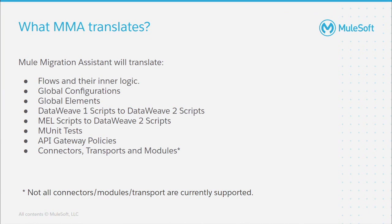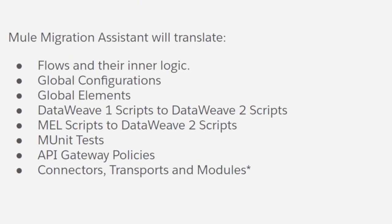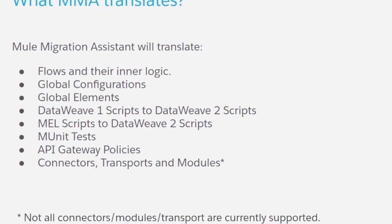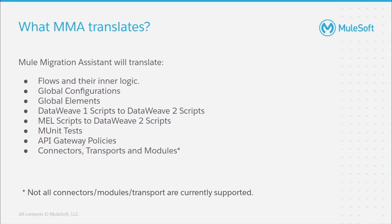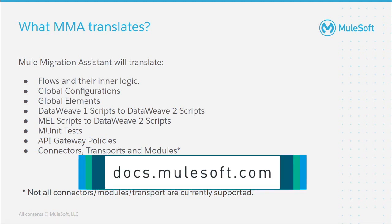Since the MMA tool won't translate 100% of your applications, this naturally brings up the question of what will the MMA tool translate for you. There are several Mule 3 components that will be able to be directly converted to Mule 4 components. These include the individual flows and their overall logic, the global configurations governing your applications, the DataWeave 1 and Mule expression language scripts which will be converted into DataWeave 2 scripts, your unit tests written in M-unit, the policies applied to your applications, as well as a subset of connectors, transports, and modules. It's important to note that not all connectors, modules, and transports are able to be automatically converted with the MMA. For a full list of what's supported, check out our documentation at docs.mulesoft.com.